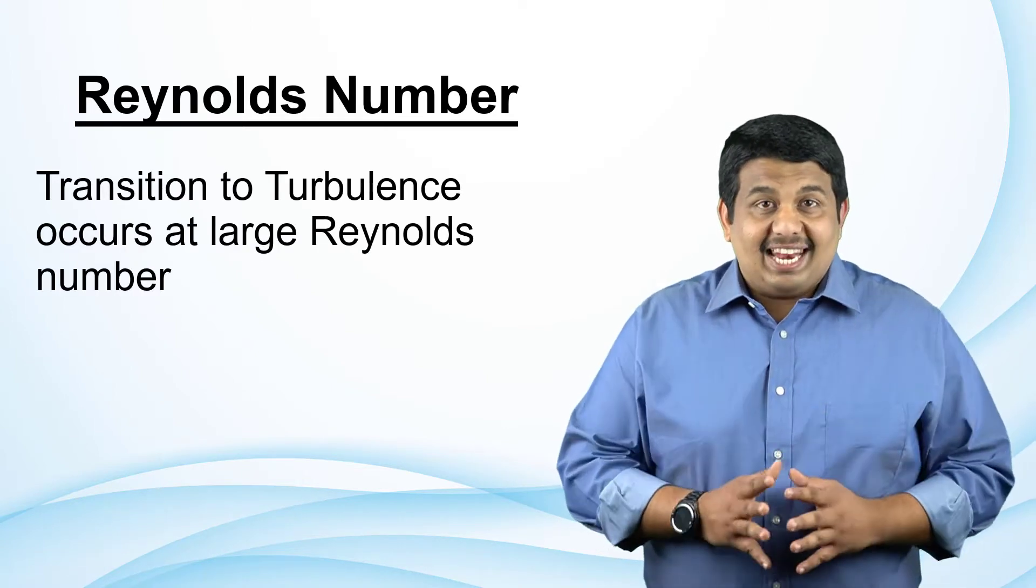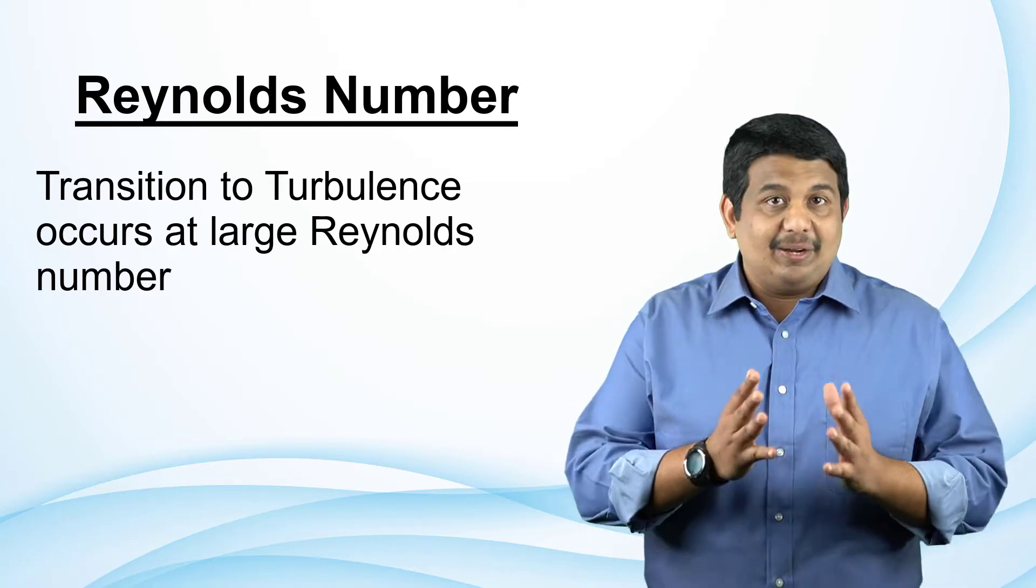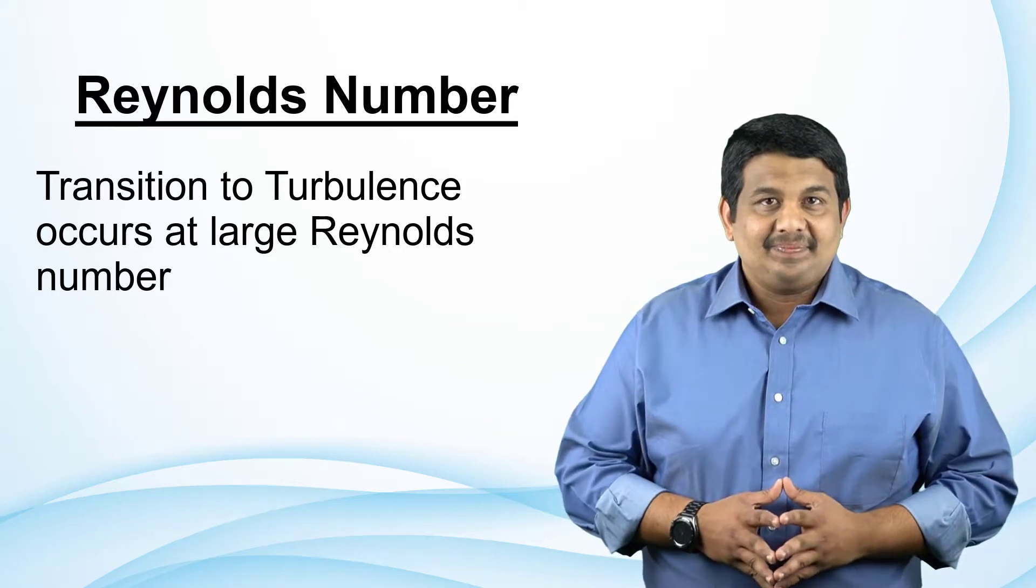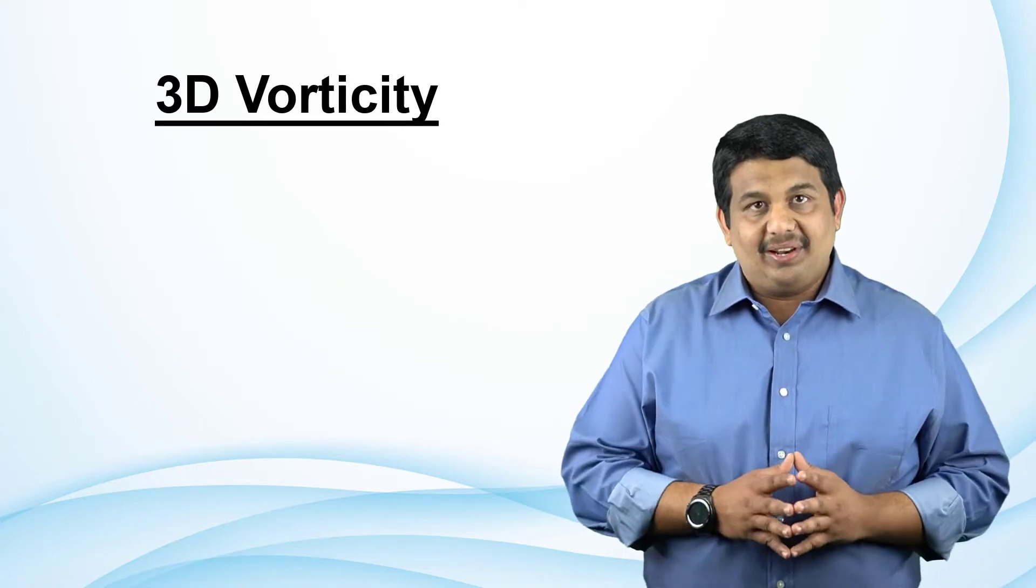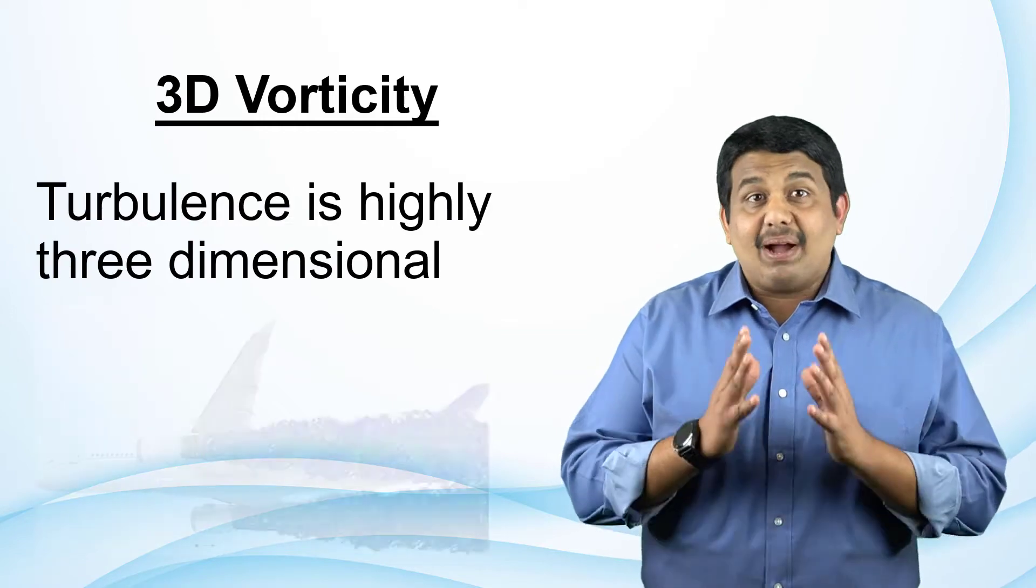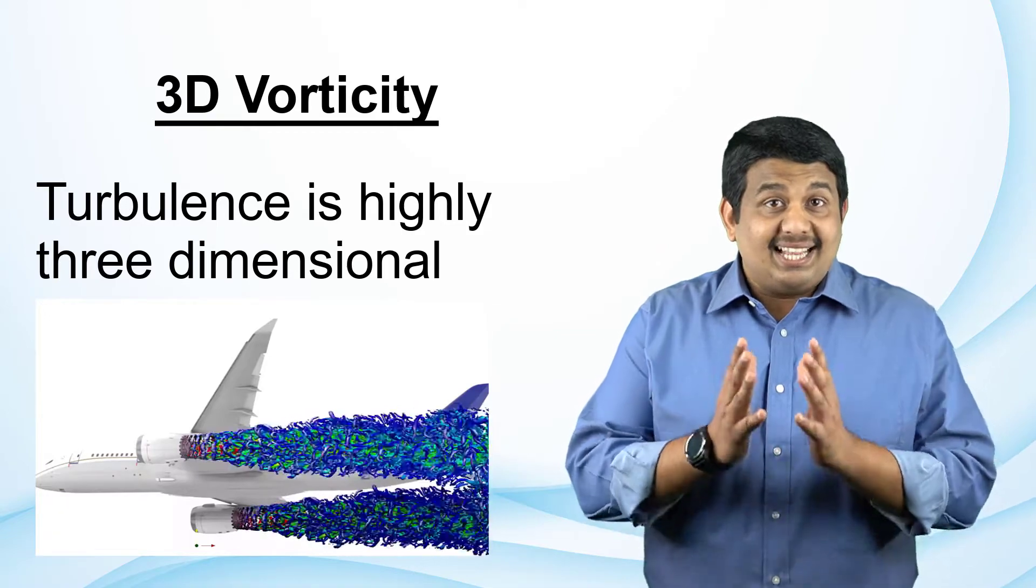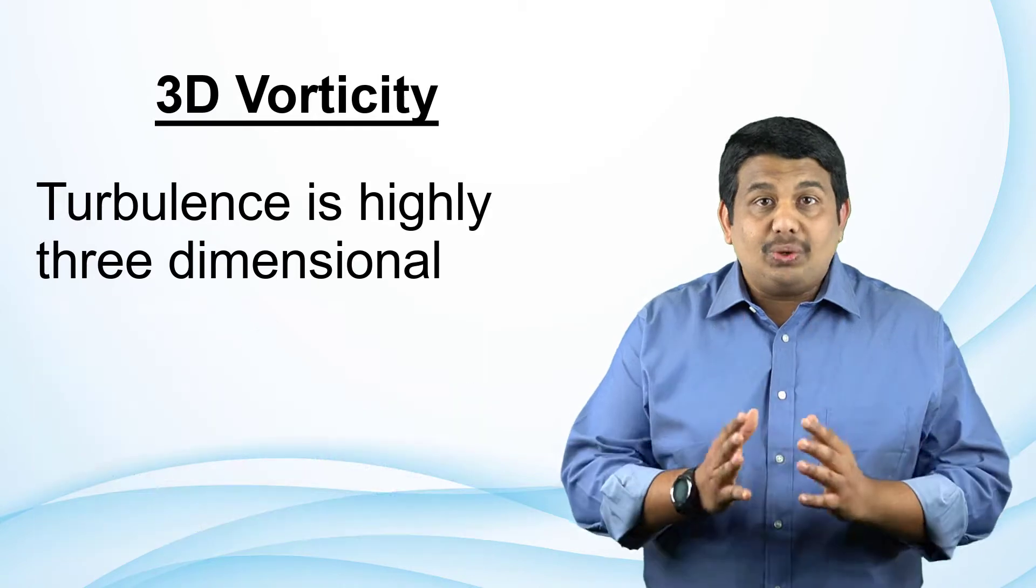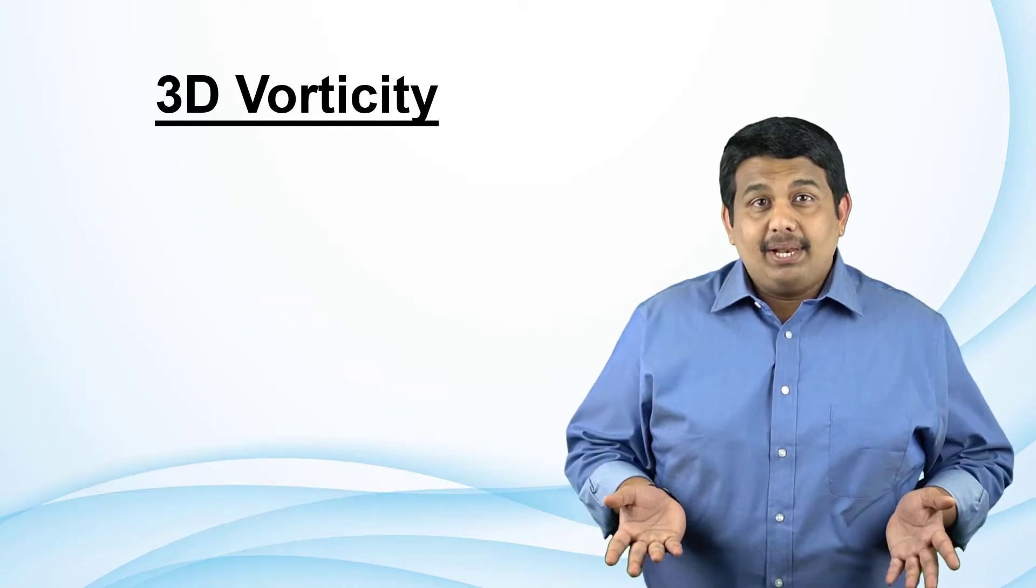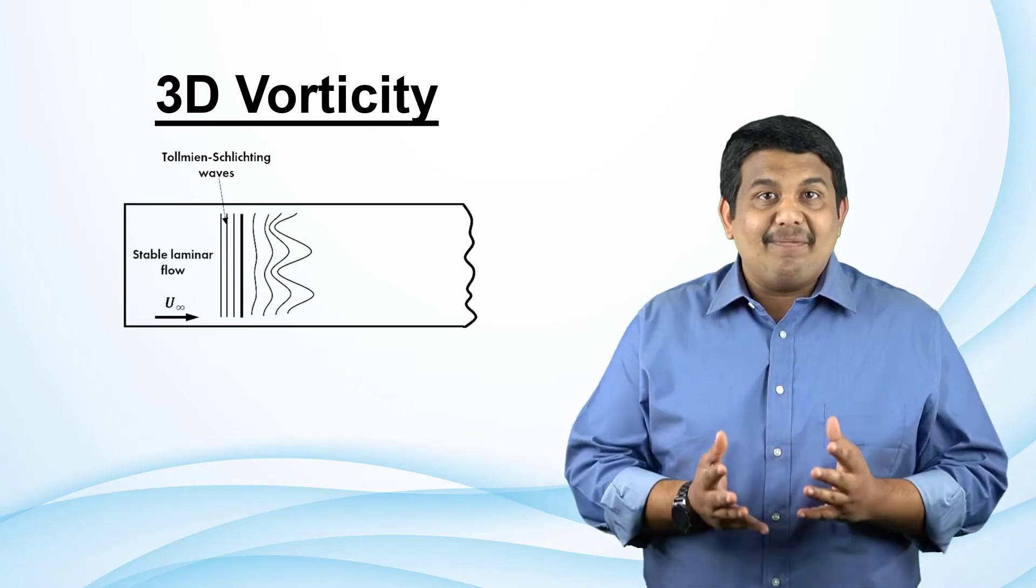The instability of the laminar flows eventually results in their transition to exhibit turbulent character. Three-dimensional vorticity. Turbulence is inherently three-dimensional and rotational and is characterized by high levels of vorticity. Though disturbances that result in the laminar to turbulent transition may start as two-dimensional, for example, the Tollmien-Schlichting waves, they quickly adopt a three-dimensional behavior.